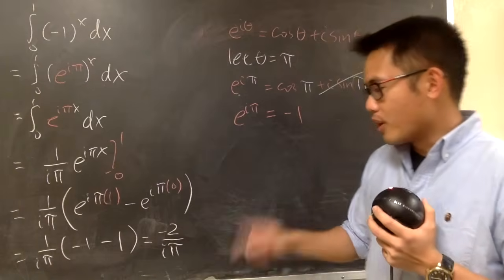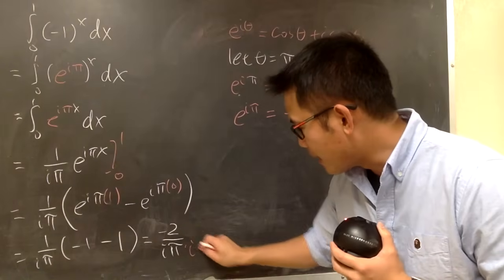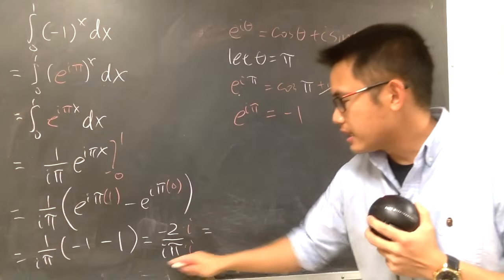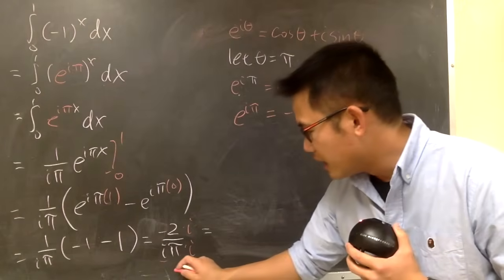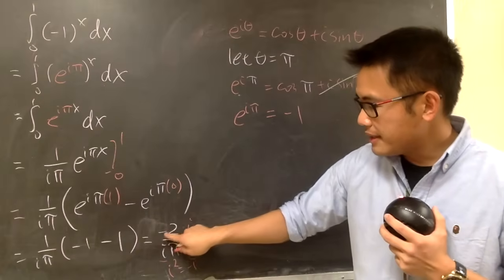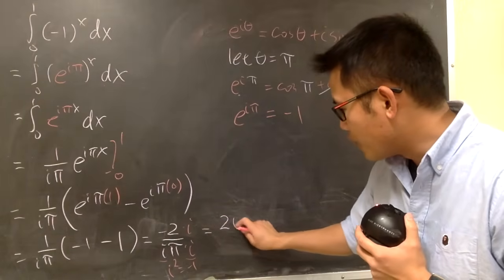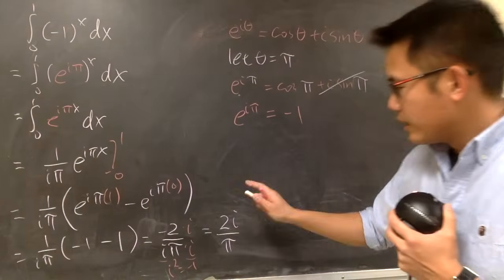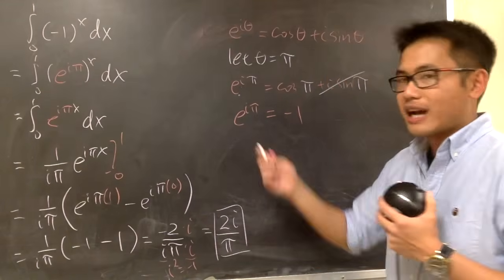And you are pretty much done, but I don't like i to be on the bottom, I like to be on the top. So, let's multiply the bottom by i, and also the top by i. And you see that, on the bottom here, i times i gives us i squared, which is negative 1, and negative 2 divided by negative 1 is positive, so we actually have 2i on the top. On the bottom, we will just have the pi, 2i over pi. This will be my final answer for that.